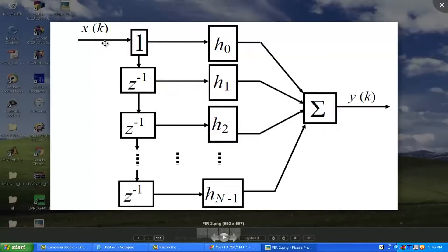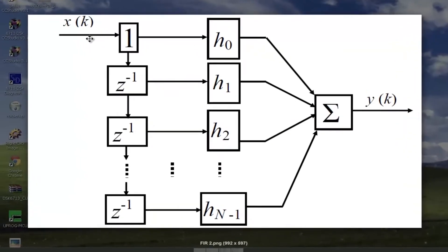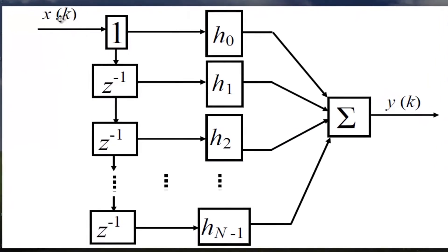This is the channel FIR filter. X[k] is the input signal, where k indicates which sample it is - k may be 0, 1, 2, 3, 4. Relating this with C language, X[k] can be an array in which k depends on how many elements are there for the input signal. Then we have H[0], H[1], H[2], and H[3] - these we can consider as the filter coefficients. These filter coefficients can be generated by mathematical or theoretical calculations.